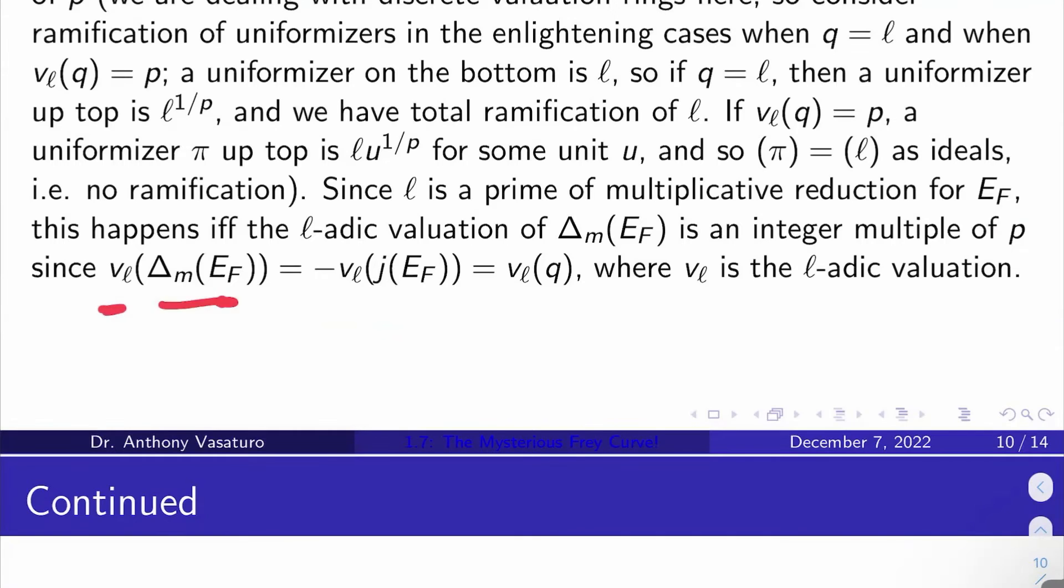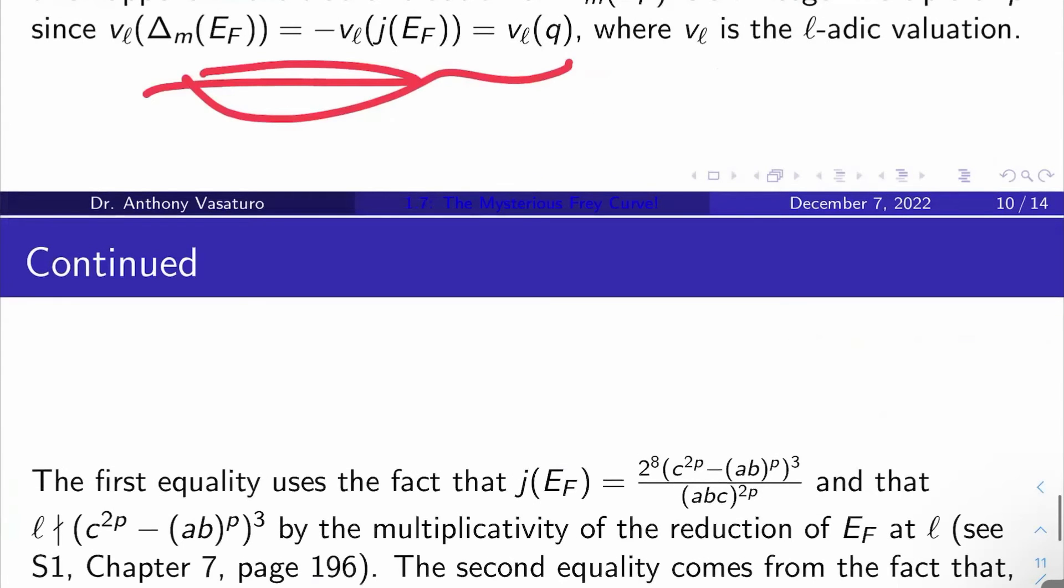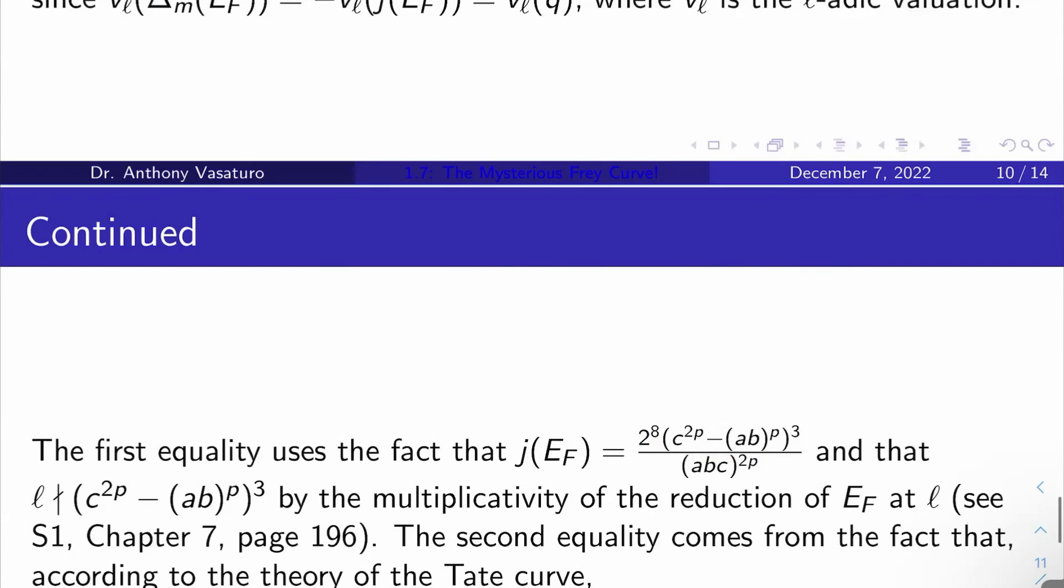The l-adic valuation of the minimal discriminant of E_F turns out to be the negative of the l-adic valuation of the j-invariant of E_F, which is the l-adic valuation of q, the q from Tate uniformization. So, it's very clear that this equality here in particular is just a symbolic version of what I said. So, now the question is, why are these two equalities true? Well, the first equality uses the fact that the j-invariant is c_4^3 over the minimal discriminant. But l doesn't divide this piece right here by the multiplicativity of the reduction of the Frey curve at l. You can see Silverman 1 chapter 7 for why that's true. So, that's where we're using multiplicative reduction.